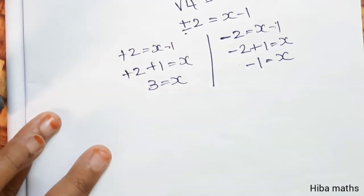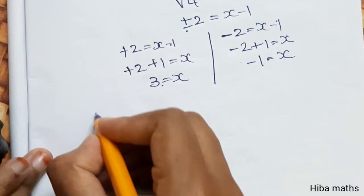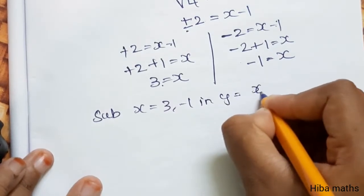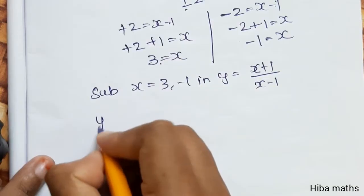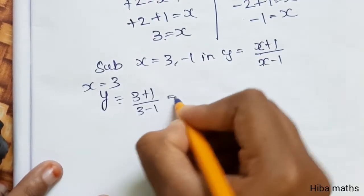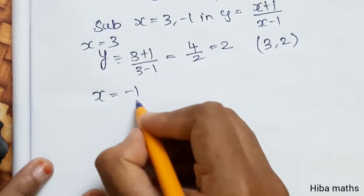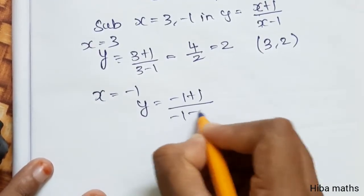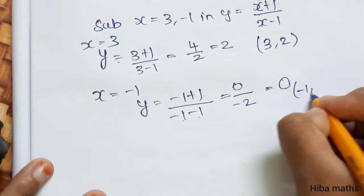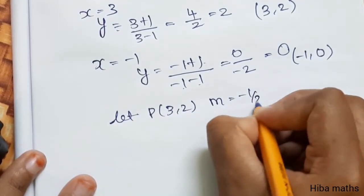Substituting into the curve y equals (x+1)/(x−1): at x equals 3, y equals (3+1)/(3−1) equals 4/2 equals 2, giving point (3, 2). At x equals −1, y equals (−1+1)/(−1−1) equals 0/(−2) equals 0, giving point (−1, 0).